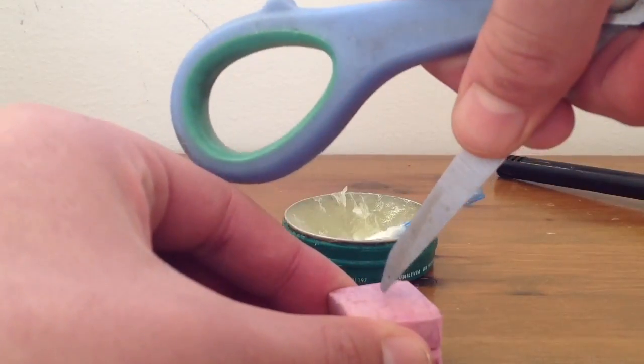What you do with scissors is you get one edge of the scissors and you put it in the top of the chewy sweets.